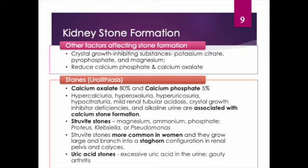Hypercalciuria (high calcium in the urine) and hyperoxaluria (high oxalate in the urine) are usually caused by intestinal hyperabsorption and, less commonly, a defect in renal calcium reabsorption. However, hyperparathyroidism and bone demineralization associated with prolonged immobilization are also known causes of hypercalciuria. Understanding how hyperparathyroidism can cause hypercalciuria leading to calcium-type stones is important, as these are the most common stones.